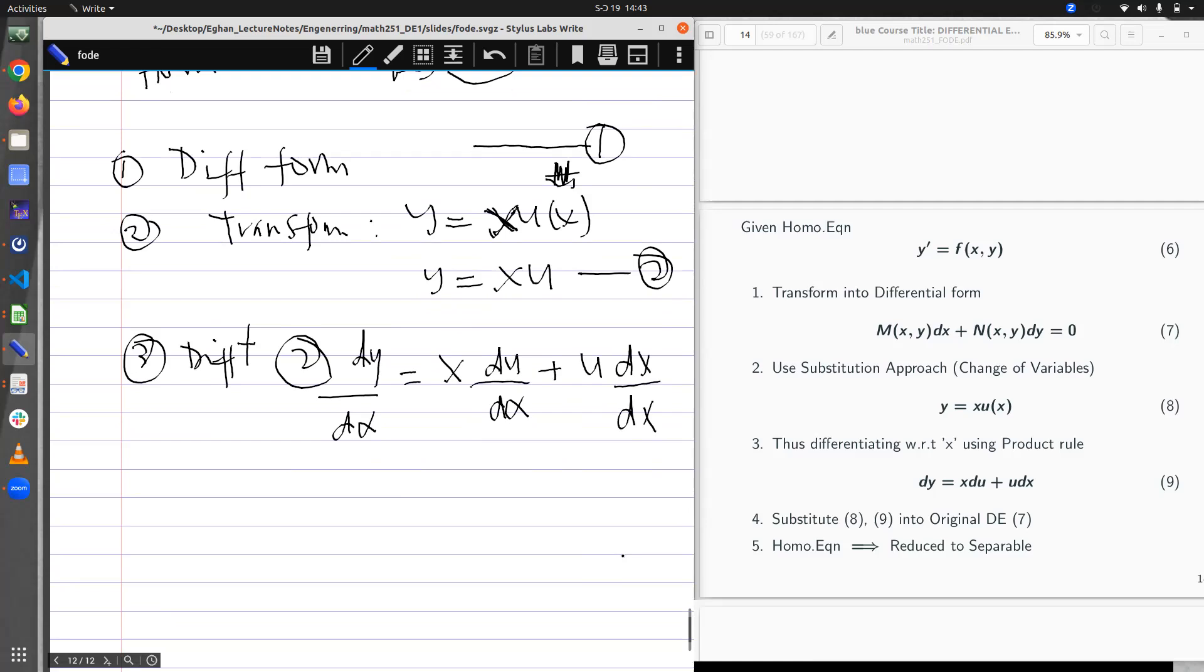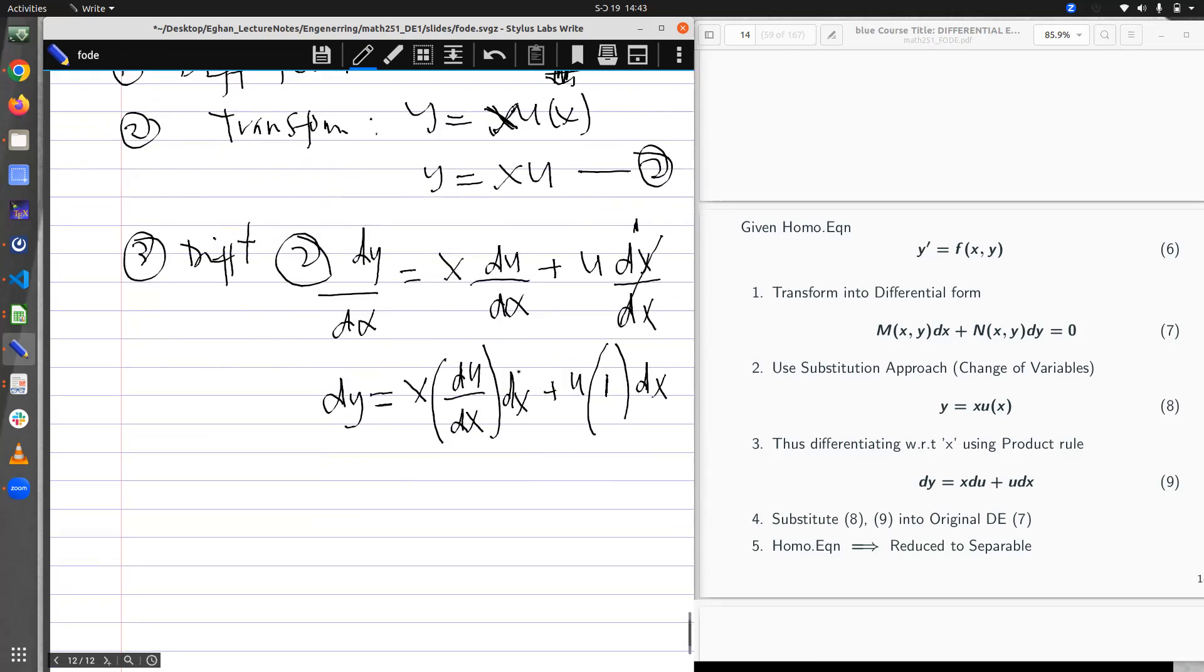If I want to simplify this further, you realize that if I multiply by dx, I have dy equal to x du times dx plus u, the x dx is one times dx. This counts out to be one. Writing it properly, I'll have dy equal to x du because this and that cancels out, plus u dx.